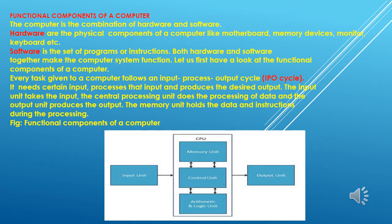Let's start the topic: functional components of a computer. As you know, a computer is an electronic device and it is a combination of hardware and software. Hardware is the physical components like keyboard, mouse, and monitor which you can see and touch. Software refers to programs and instructions given to the computer. Hardware and software complement each other. Every computer follows the input-output cycle: input is processed and output is produced. This is called the IPO cycle.